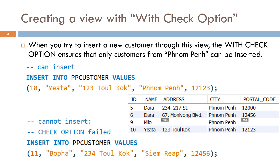But we cannot insert when the check option fails. For example, if we insert a customer that is not in the city of Phnom Penh: INSERT INTO PP_customer VALUES (11, 2, 3, 4, 2, 'Cook', 'Siem Reap', 12456). This insert statement will be rejected since it fails the criteria inside the SELECT statement of PP_customer, where the city must be Phnom Penh.